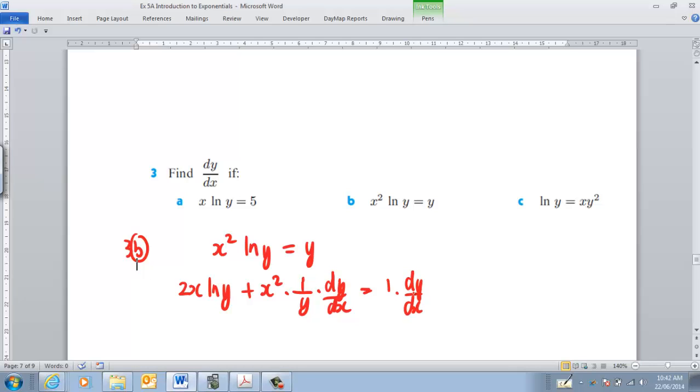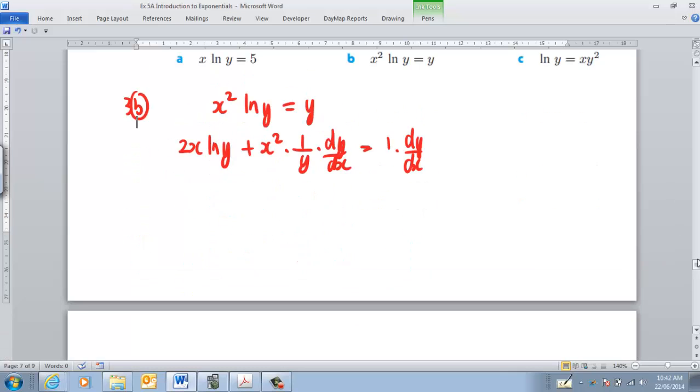And the secret is to bring all your dy's to one side. And then what you do is you bring everything else on the other side. So in this particular case, I might bring that to the side over here. So then I'll have 2x ln y, that's equal to 1 minus x squared over y, because that's that term there. And then that's going to be simply dy dx.